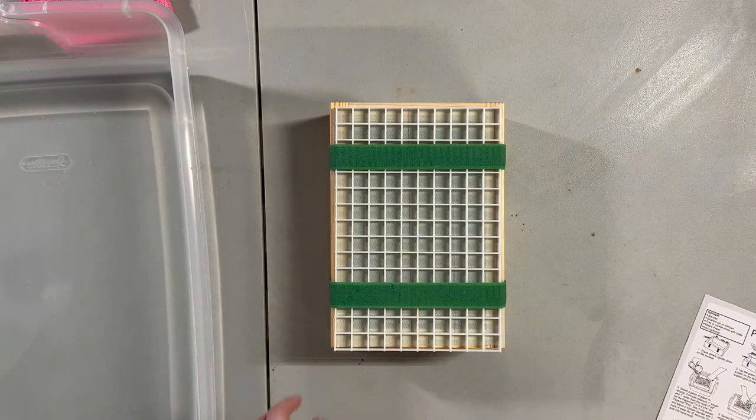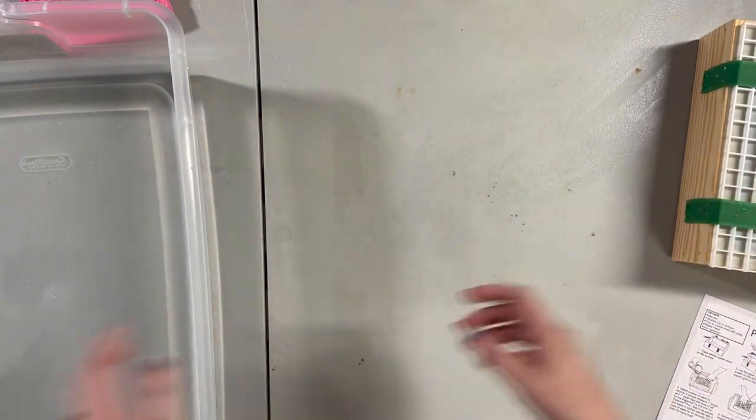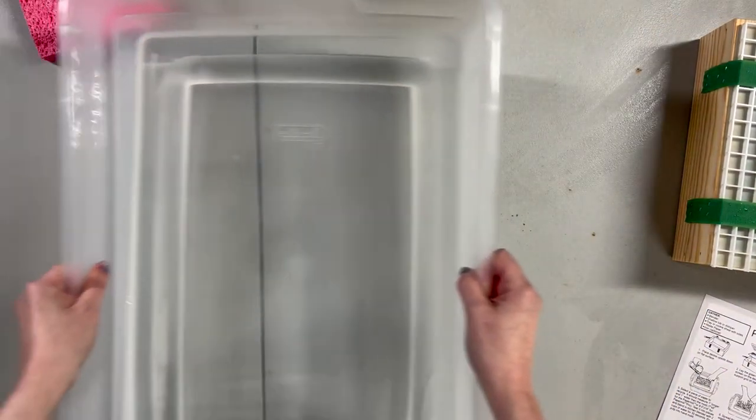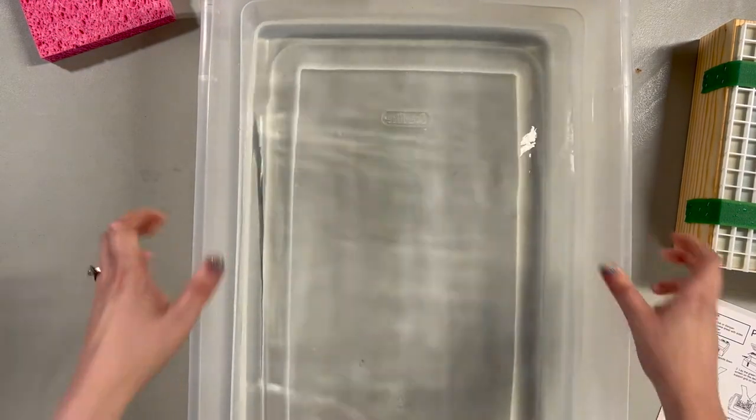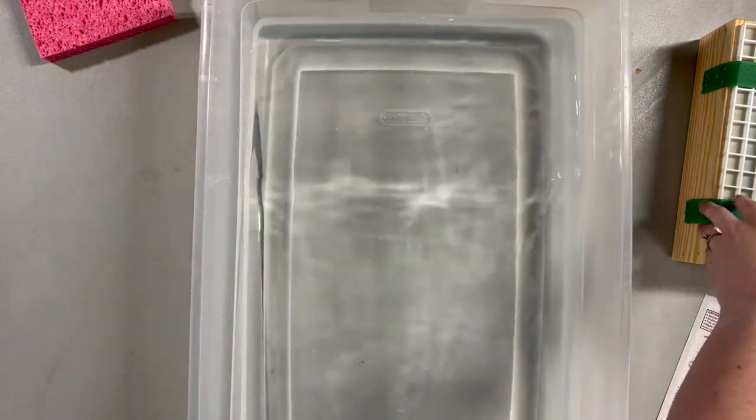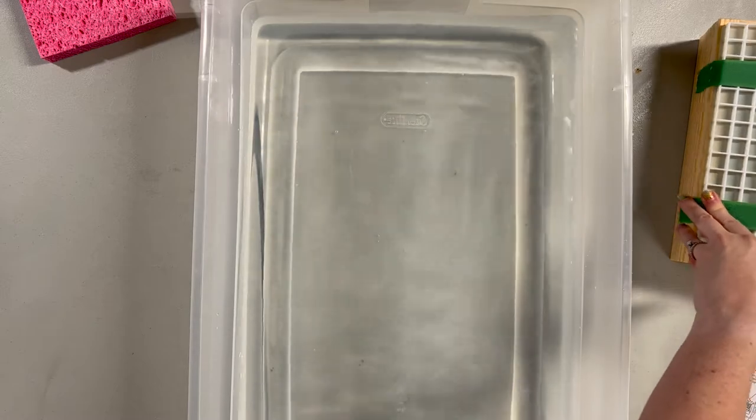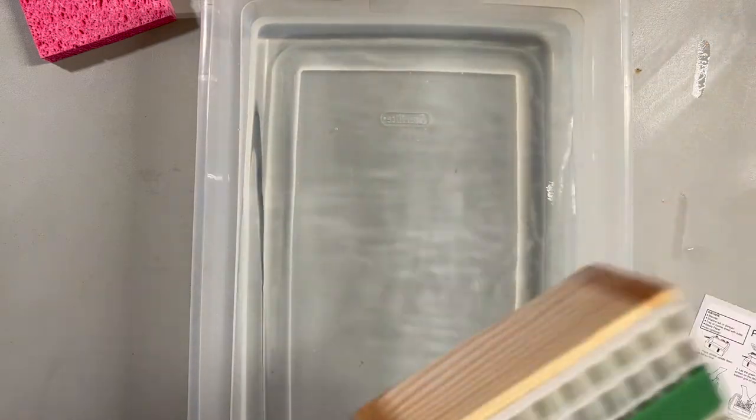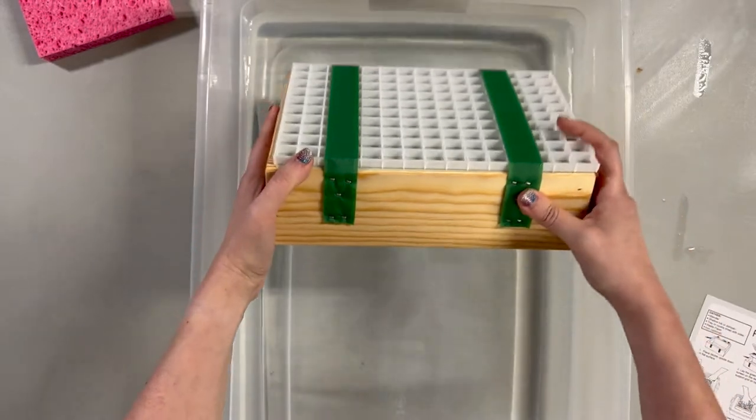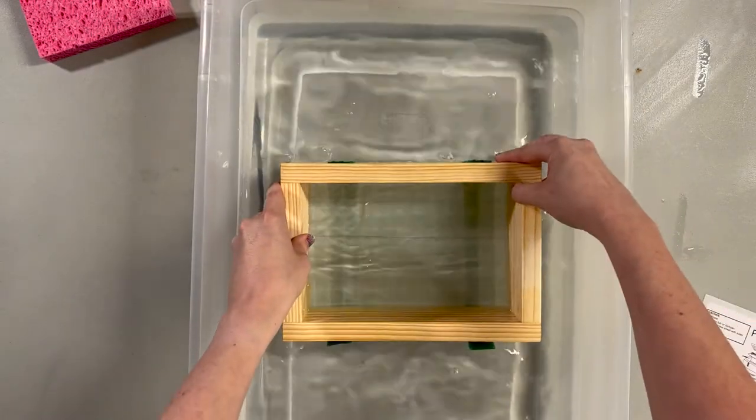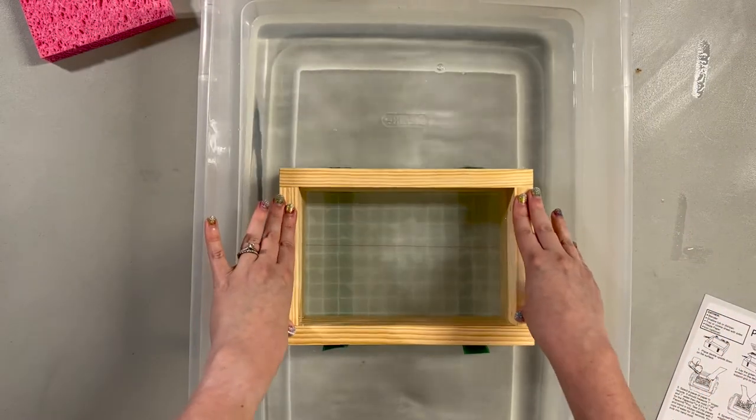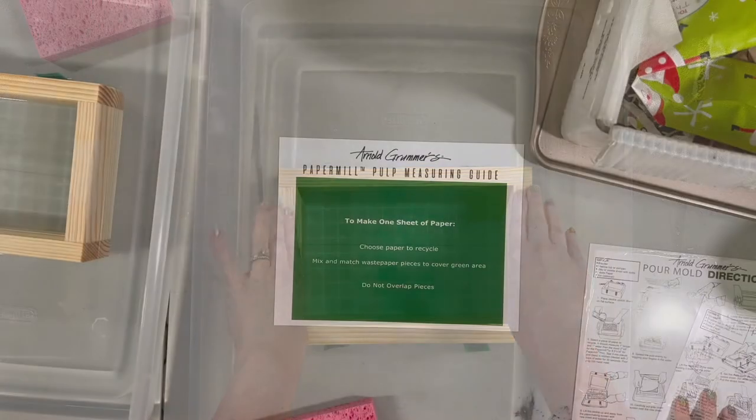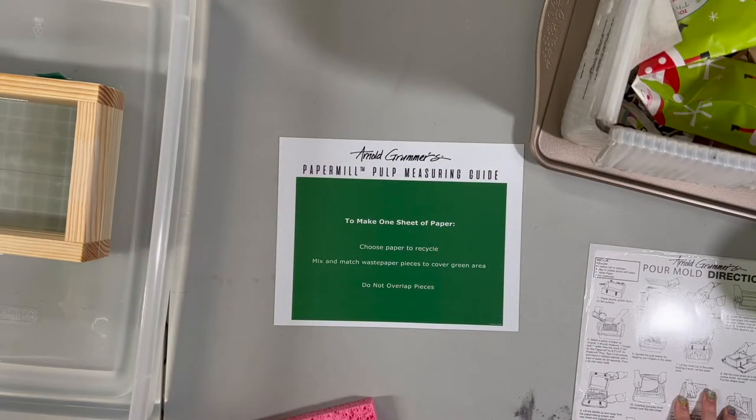Okay, and then it says to lower your hand mold at a slanted angle into the water or tub or dish pan. So we'll do that, that's easy enough. Next it says to select a piece of paper to recycle.